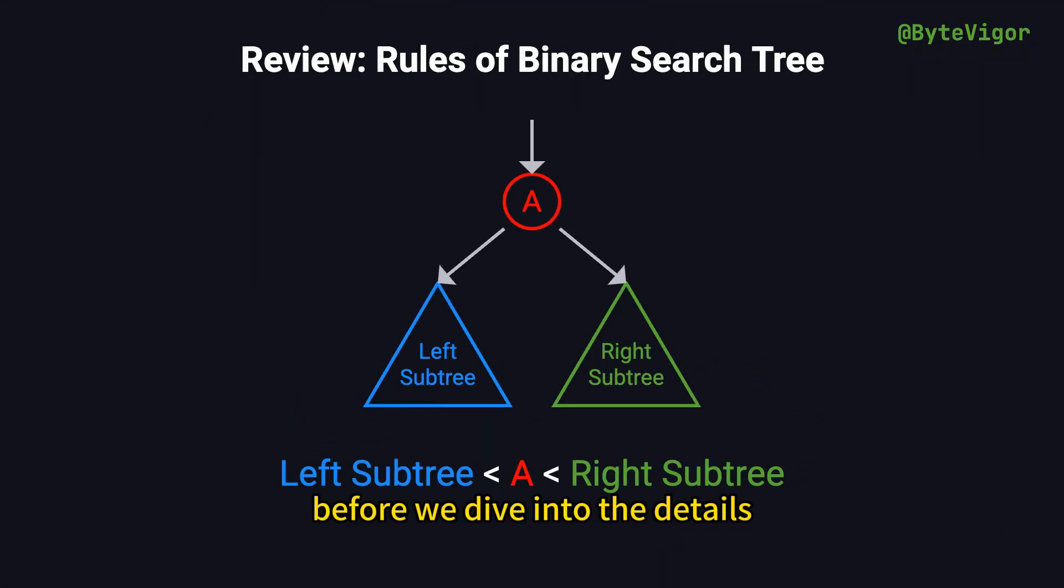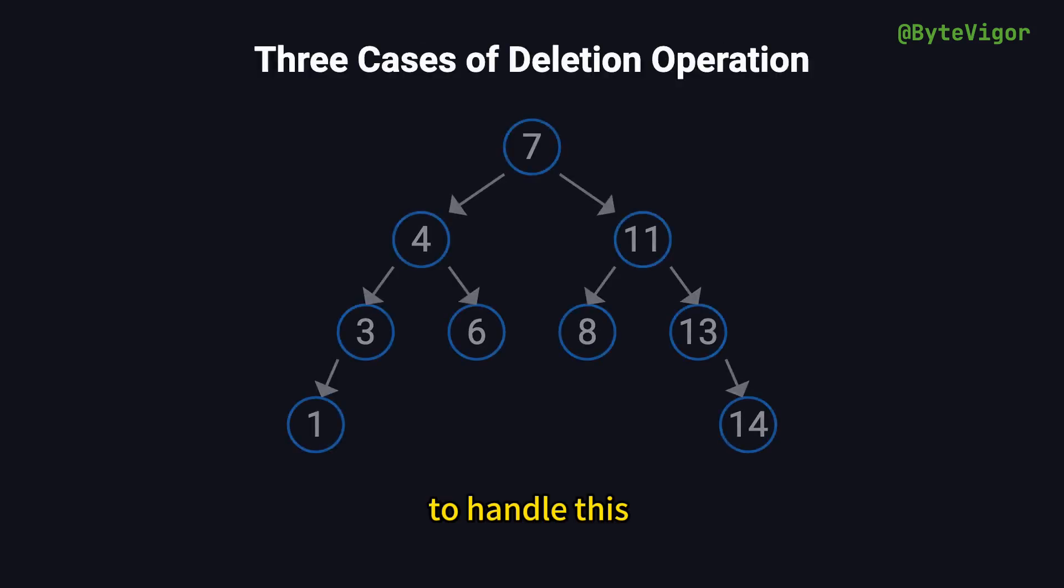Before we dive into the details, let's quickly recap the key properties of a binary search tree. For any given node, all values in its left subtree are smaller, and all values in its right subtree are larger. When performing a delete operation, it's crucial to maintain this structure. To handle this, we need to consider three scenarios.